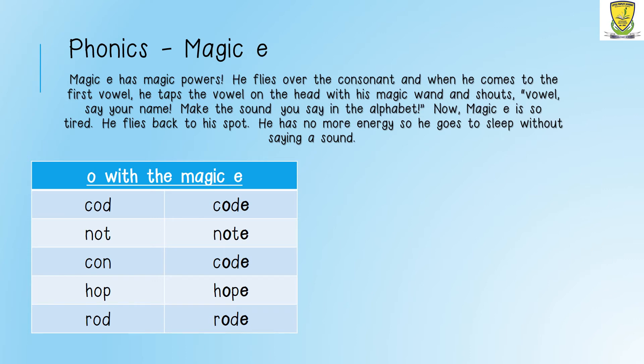So let's try one more example together: R-O-D, rod. If I add a magic E at the end of the word, my O now becomes an O. So my word is going to be R-O-D-E, road. R-O-D-E, road.